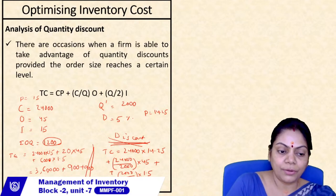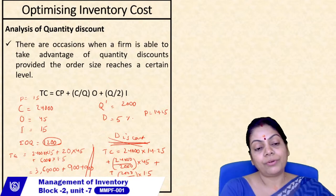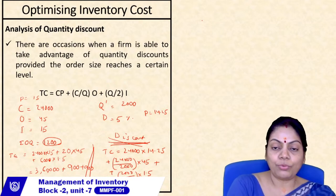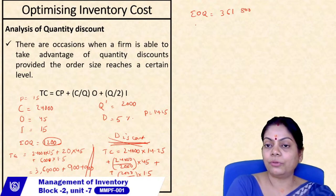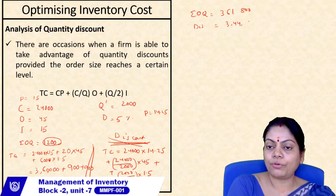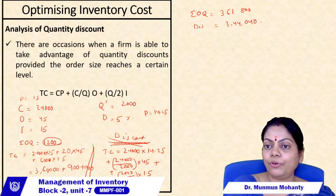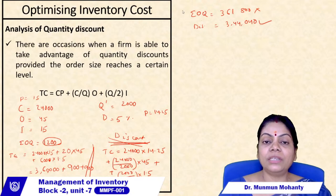Comparing the two options: under EOQ the total cost is ₹3,61,800, while under the quantity discount the total cost is ₹3,44,040. Since the discount option is cheaper, we should accept the quantity discount and discard the EOQ option. This is how we optimize inventory cost when a supplier offers bulk purchase discounts.